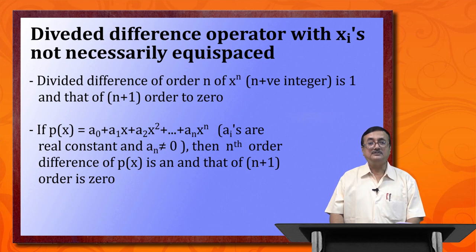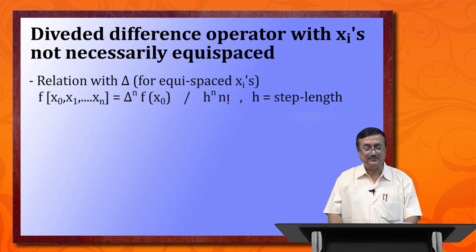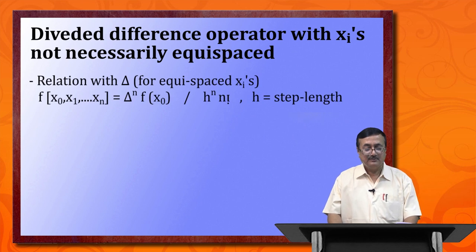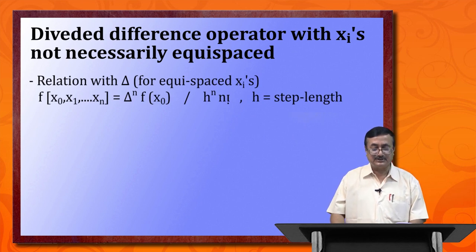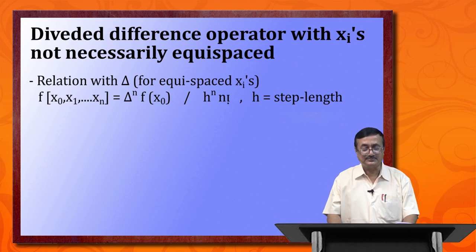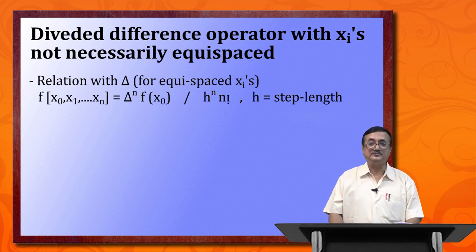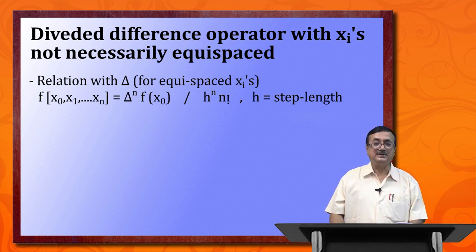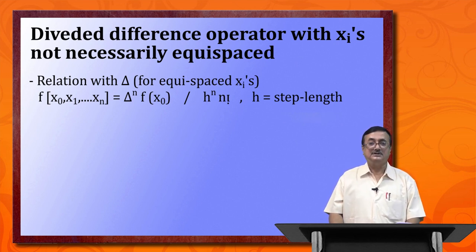Dear students, please write down the relationship between the forward difference delta and the divided difference. For equispaced nodes, this will be very helpful in our future calculations.